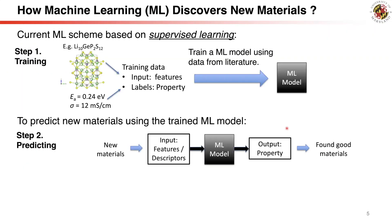So how can machine learning be used to discover materials? A major branch of machine learning is called supervised learning, where models are trained on labeled data. A well-known example is recognizing objects in images — you train on many images labeled with what's inside, such as dog or cat, and the trained model can later recognize new images to identify whether it's a dog or cat.